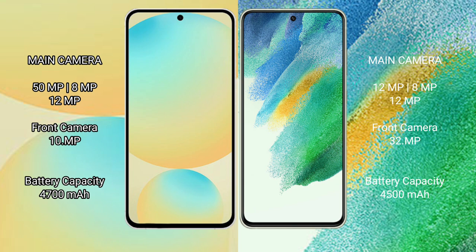The Samsung Galaxy S24 Ultra features a rear triple camera setup: 50MP plus 8MP plus 12MP, and a 10MP front camera. The Samsung Galaxy S21 Ultra features a rear triple camera setup: 2MP plus 8MP plus 12MP, and a 32MP front camera.